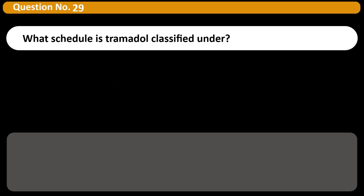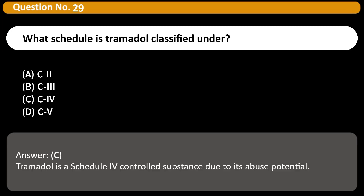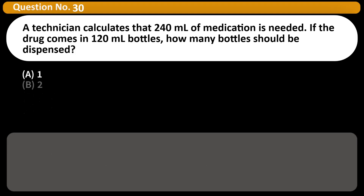What schedule is Tramadol classified under? A. C2. B. C3. C. C4. D. CV. Answer: C. Tramadol is a Schedule IV controlled substance due to its abuse potential.